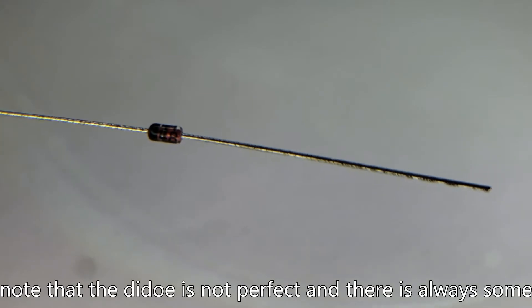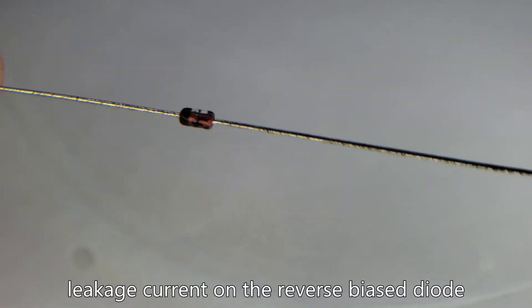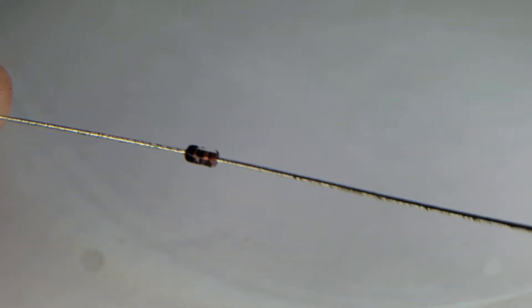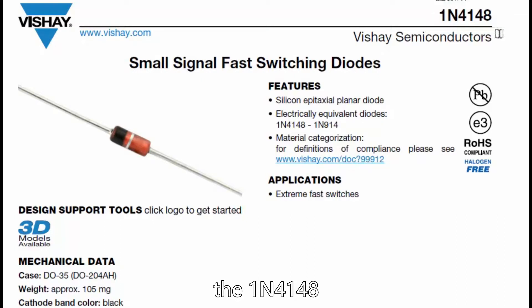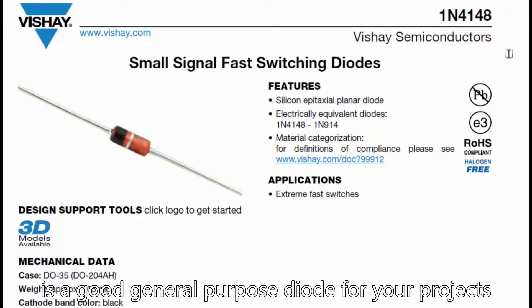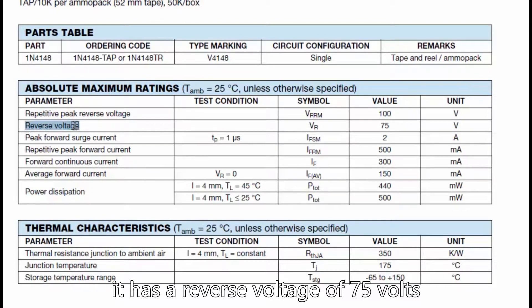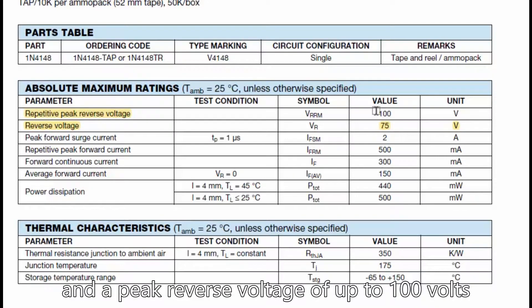Note that a diode is not perfect and there is some leakage current on a reverse biased diode. The 1N4148 is a good general purpose diode for our projects. It has a reverse voltage of 75 volts and a peak reverse voltage of up to 100 volts.